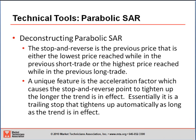To deconstruct the Parabolic Time Price System, the stop-and-reverse is the previous price that is either the lowest price reached while in the previous short trade or the highest price reached while in the previous long trade. You then add the unique feature of the parabolic system: an acceleration factor, which is a built-in method that causes the stop-and-reverse point to tighten up the longer the trend is in effect. For example, if your original stop-loss is 10%, by the time the trend ends that stop-loss may have fallen to 4% or even 3%. You can adjust the acceleration factor in the parameters on your Reuters machines or any other quote service, but it is essentially a trailing stop that tightens up automatically as long as the trend is in effect.